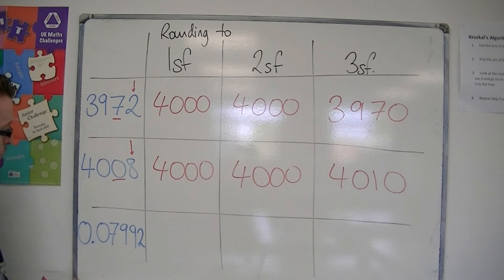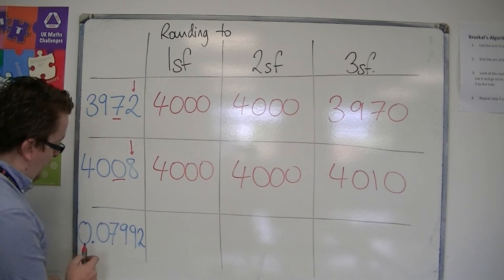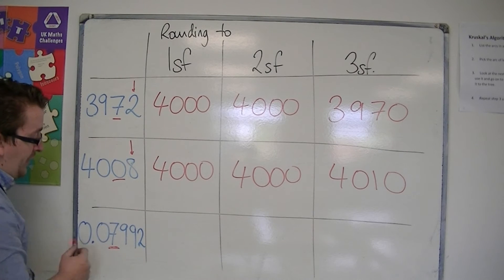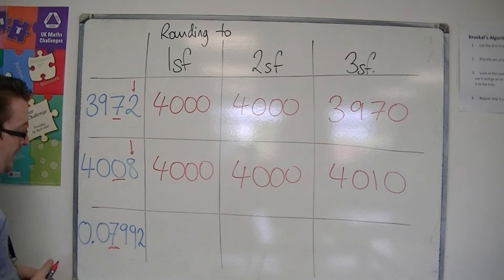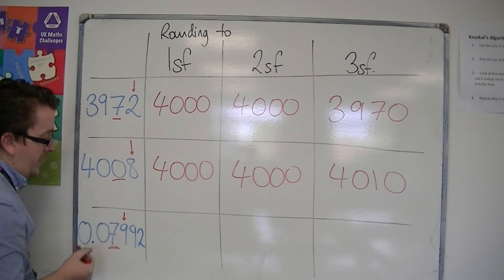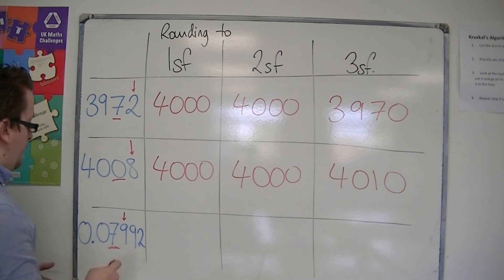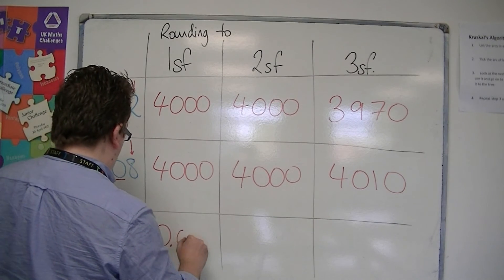The third example, to one significant figure, the first significant figure column is the 7. So you ignore the zeros at the front, and it is then the 7. The 1 to the right is 9, so I would round it up to 0.08.